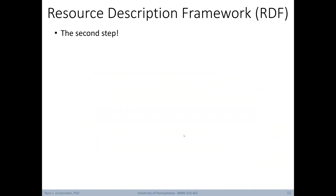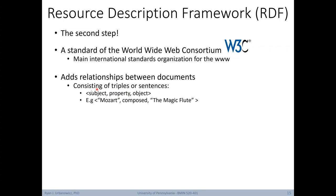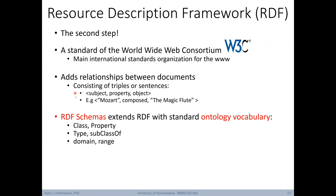The next more slightly advanced step is something called Resource Description Framework, or RDF — a standard of the World Wide Web Consortium, or W3C, the main international standards organization for the World Wide Web. One thing RDF does is add relationships between documents through triplets or sentences. For example, a triplet has a subject, property, and object — where our subject is Mozart, the property is 'composed,' and the object is The Magic Flute. This basic RDF schema extends RDF with standard ontology vocabulary: a class is a property, a type is a subclass of, and a domain specifies a range. However, there's no precisely described meaning or inference model designed to work with RDF as is.